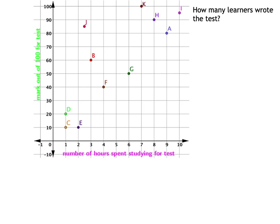The first question: how many learners wrote the test? Well, as each point represents a learner, all we have to do is count them. 1, 2, 3, 4, 5, 6, 7, 8, 9, 10, 11. So there were 11 learners who wrote the test.